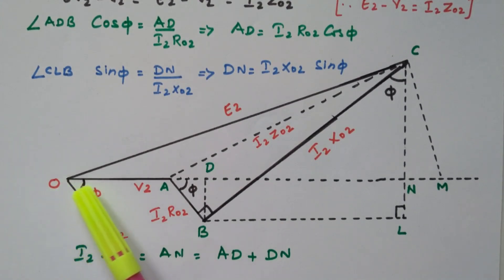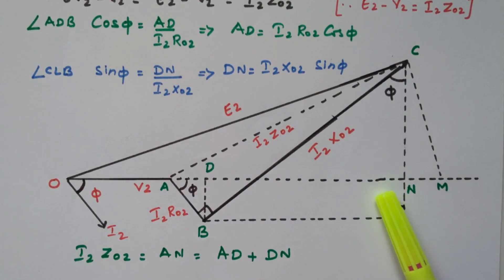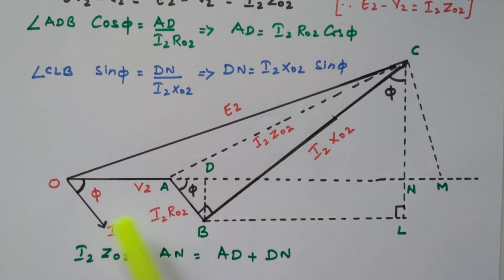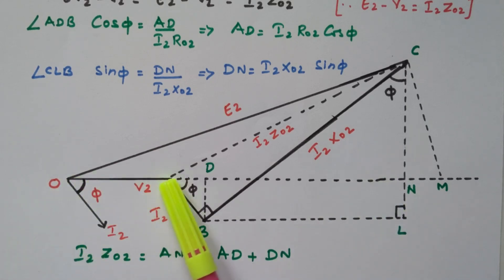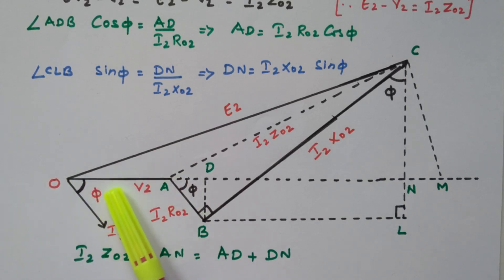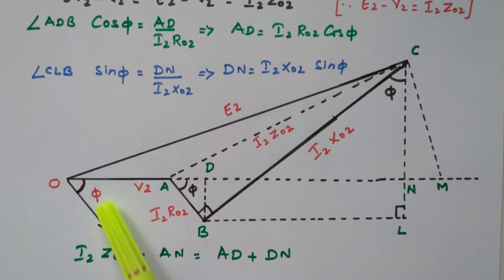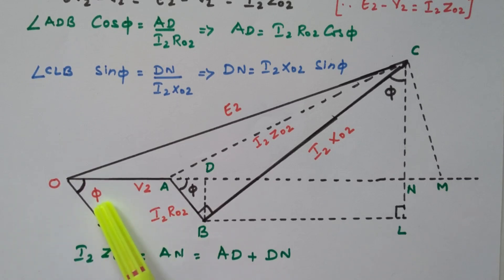This is the vector phasor diagram. From that we can find the expression for no-load voltage to full-load voltage. In order to find the regulation, we are taking V2 as a reference — V2 is the reference voltage. This I2 is lagging V2 by angle φ; the angle between the secondary current and secondary voltage is φ.